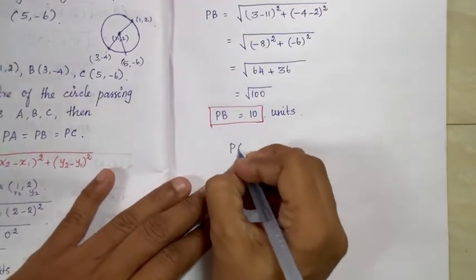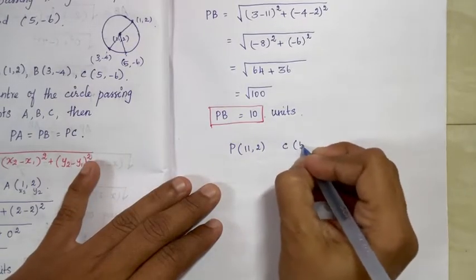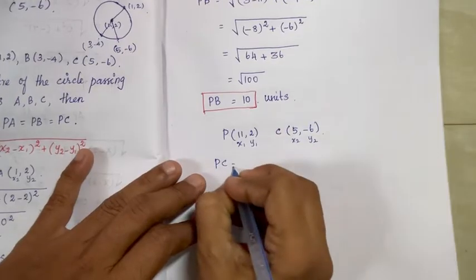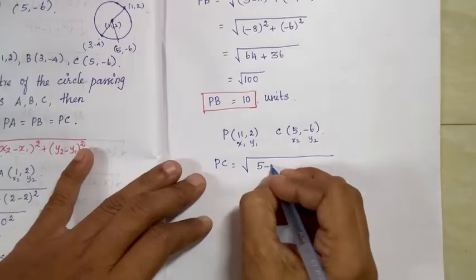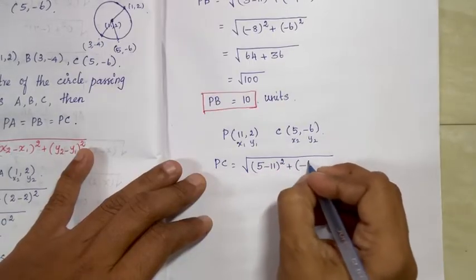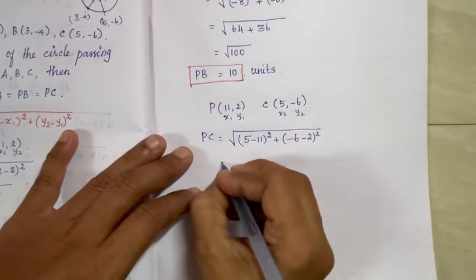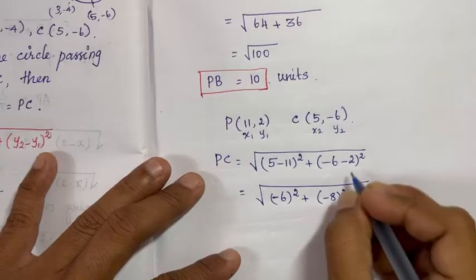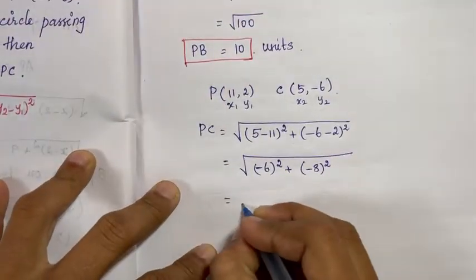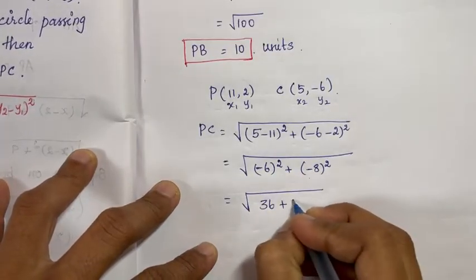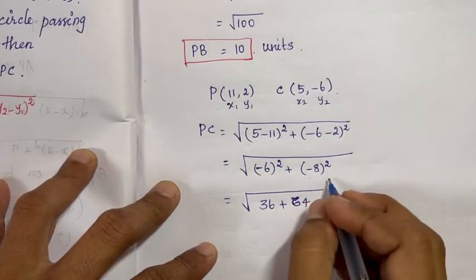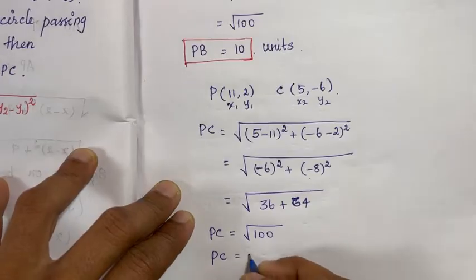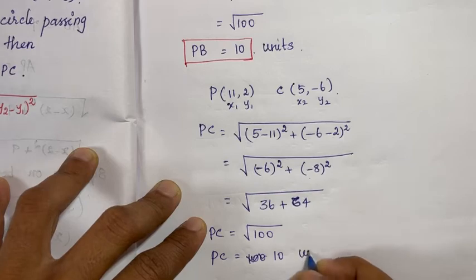Next, find PC: P is (11,2) and C is (5,−6). PC = √[(5−11)² + (−6−2)²] = √[(−6)² + (−8)²] = √[36 + 64] = √100. Therefore PC = 10 units.